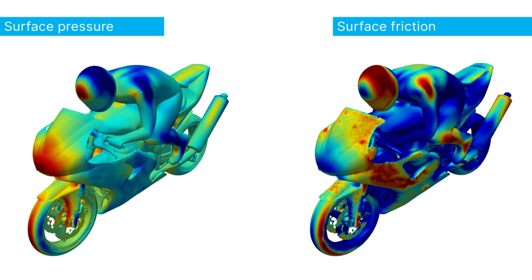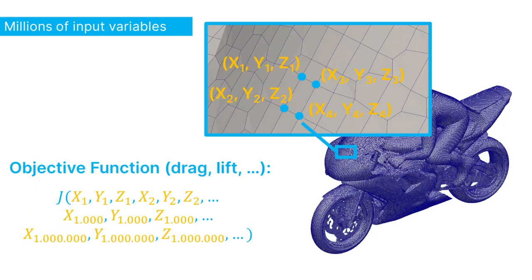Now, if you want to obtain the total drag and lift on an object, we need to integrate the pressure and the friction force on all of these small surface cells to obtain the total value. Consequently, this means that each individual node has an impact on the total drag and lift of an object.